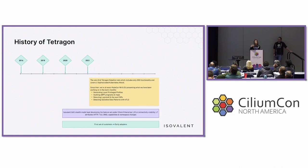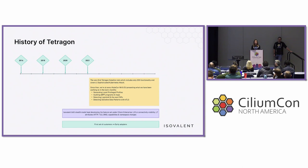We continued developing Tetragon and understanding enterprise needs. We added L3/L4 connectivity visibility, L7 attributes — HTTP, TLS, DNS — Linux capability and namespace changes. Then we got customers: these were our first set of customers, the early adopters.